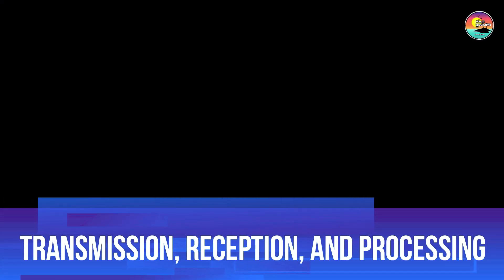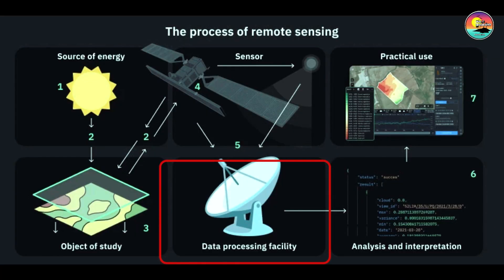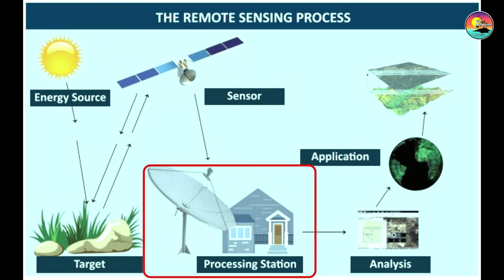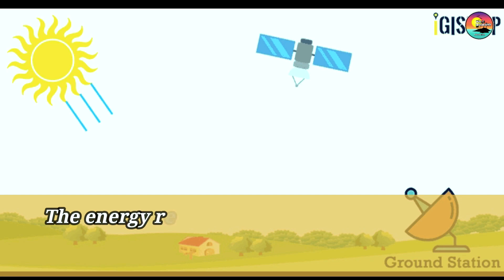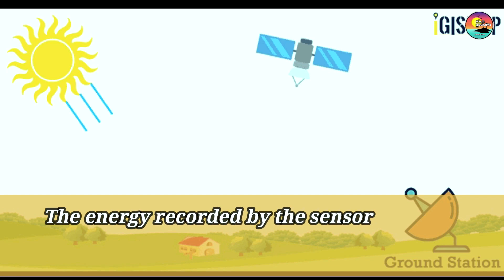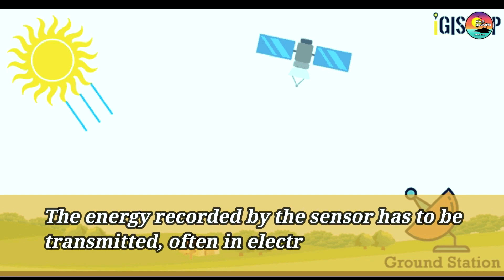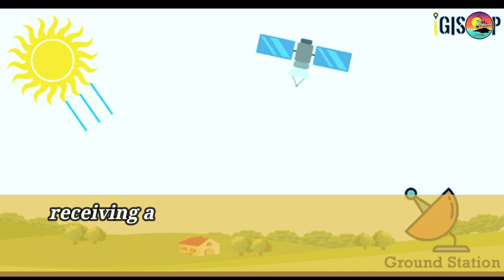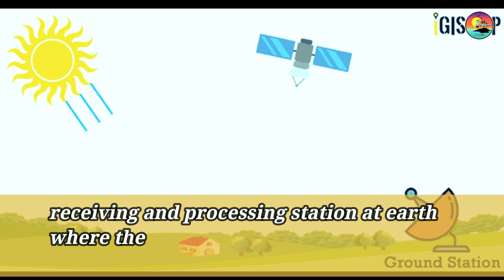Transmission, reception and processing: the energy recorded by a sensor has to be transmitted, often in electronic form, to a receiving and processing station where data are processed and stored in digital form.